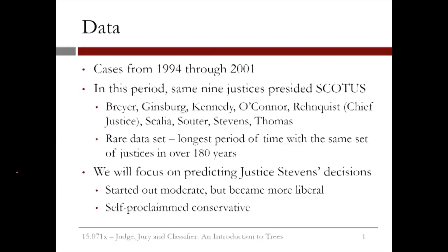To predict the outcomes of the Supreme Court, Martin used cases from 1994 through 2001. He chose this period because the Supreme Court was composed of the same nine justices that were serving when he made his predictions in 2002. These nine justices were Breyer, Ginsberg, Kennedy, O'Connor, and Rehnquist, who was the chief justice.